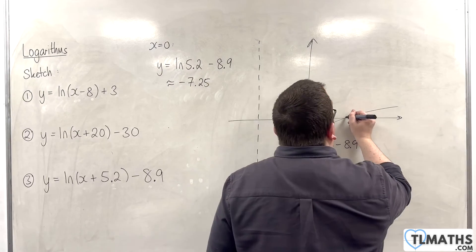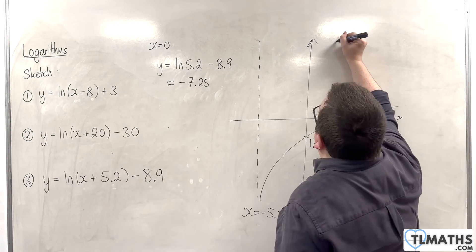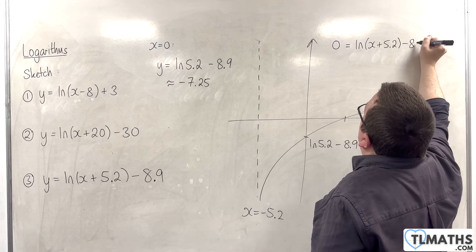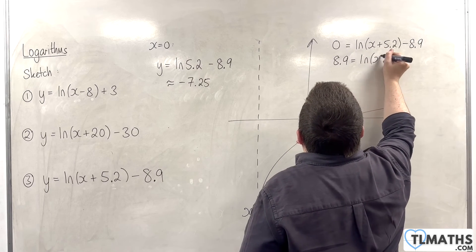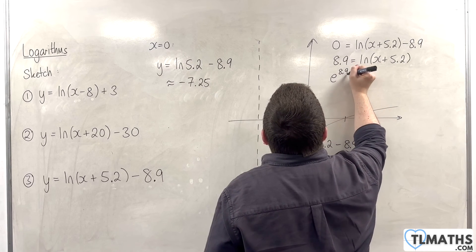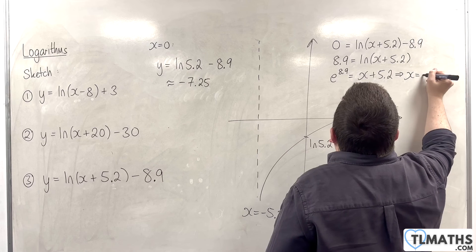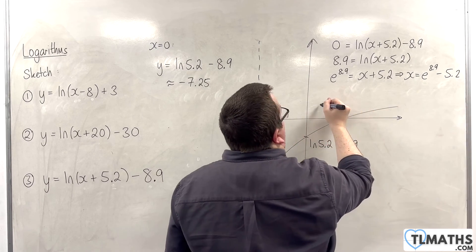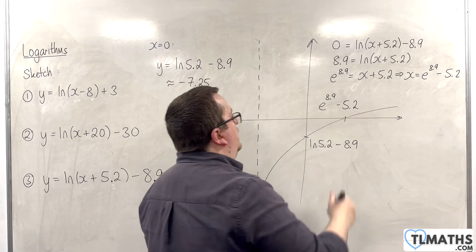The only other point I'm interested in is where it crosses the x-axis, which is where y is 0. So 0 equals the natural log of x plus 5.2 take away 8.9. Add the 8.9 to both sides, then e both sides. So e to the power of 8.9 is x plus 5.2. Therefore x is e to the power of 8.9 take away 5.2, and that is the exact point for which the curve crosses the x-axis.